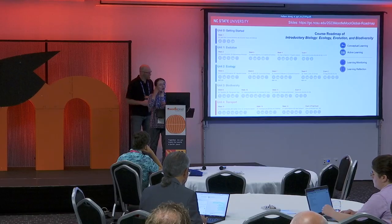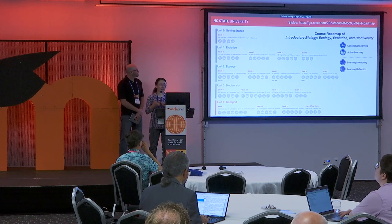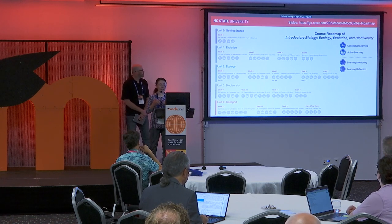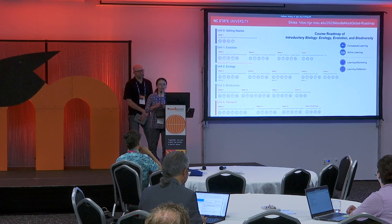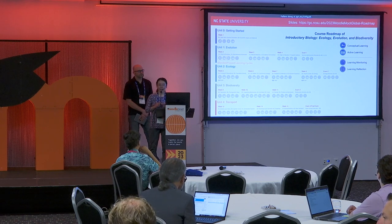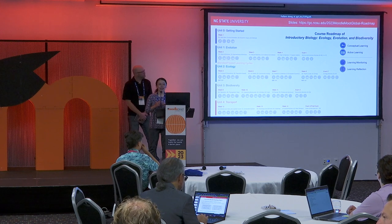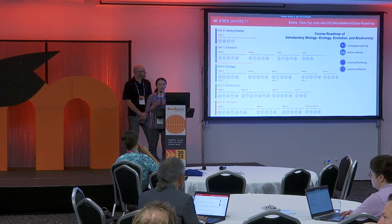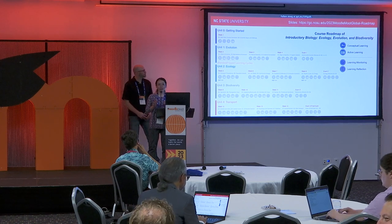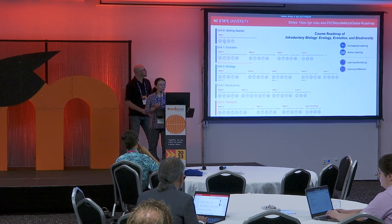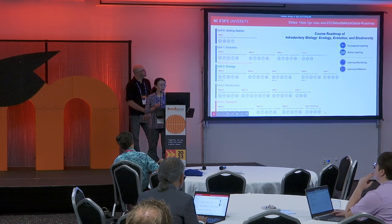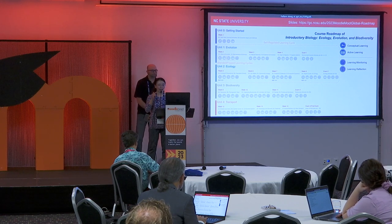Let's take a look at some course roadmap examples. This is an introductory biology course organized by four major learning units plus a getting started unit. Each unit has three to four weeks and every week has two to three modules. Every module has its own blended flipped learning cycle with two learning steps. Conceptual learning is completed online before class to learn the basic biological concepts, and active learning happens during and after class requiring students to use biological concepts to explain phenomena and solve problems. We also integrated learning reflection at the beginning, middle, and end of the course, creating the self-regulated learning cycle for units one and two together and units three and four together.